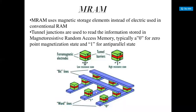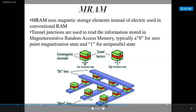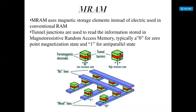Another application of GMR is called MRAM — Magnetic Random Access Memory. It uses magnetic storage elements instead of electric charge as in conventional RAM. Tunnel junctions are used to read information stored in the magnetoresistive random access memory, which typically has a zero for parallel magnetization state and anti-parallel state. This is a ferromagnetic electrode with low resistance or high resistance states in between the tunnel barrier, with a bit line and word line structure.